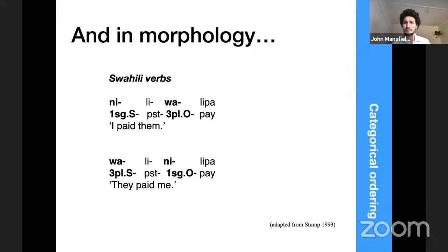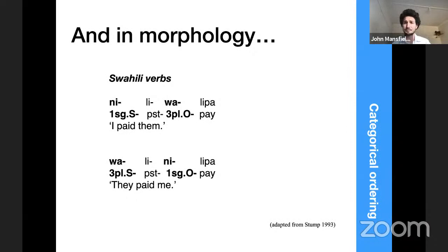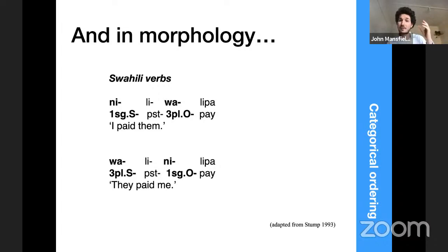This principle is also evident in morphology. A beautiful example comes from Swahili verb structure, where we see in the prefixes to the Swahili verb there's a clear first position for markers playing the role of subject agreement, then a tense position after that, and then another position for markers playing the grammatical role of object agreement. Elements belonging to the same grammatical category are in this kind of paradigmatic alternation relationship.